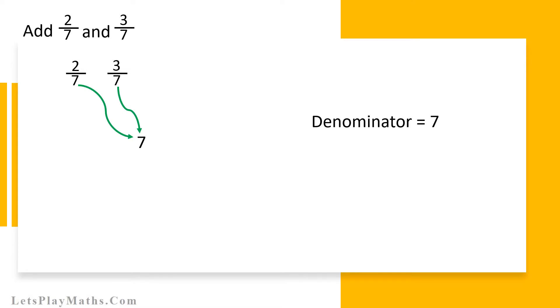Both fractions numerators are number 2 and number 3 as shown here. If we add 2 by 7 and 3 by 7, then the result's denominator will be number 7.